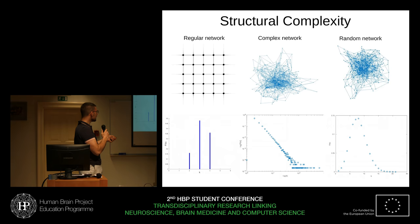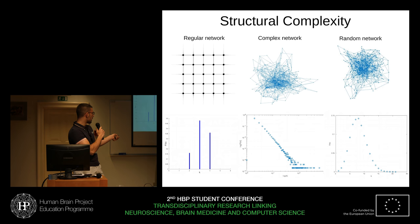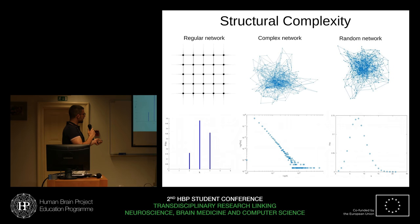In between these two regions, we have the complex network. It's complex because if you see the log-node plot, we see that there are a lot of nodes with a low degree, some of them with a really high degree, and in between them we have a lot of variety — we can choose a lot of different connectivities. In this sense, this is a complex region because emerging phenomena can happen here.